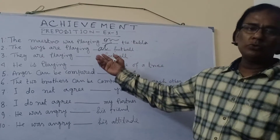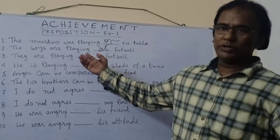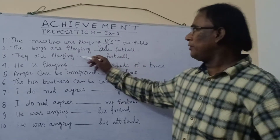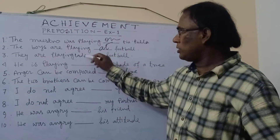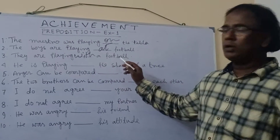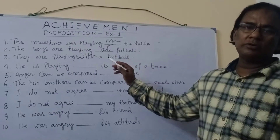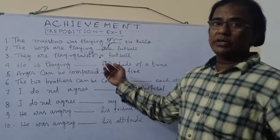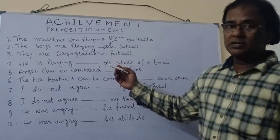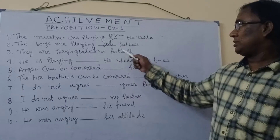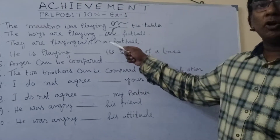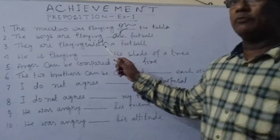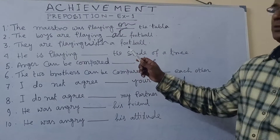Moving on to number 3: 'They are playing with a football.' Why 'with'? Because in this sentence, the word football does not refer to any game. How can we realize that? Because there is an article. Articles cannot be used before any game, whether it is football or cricket.